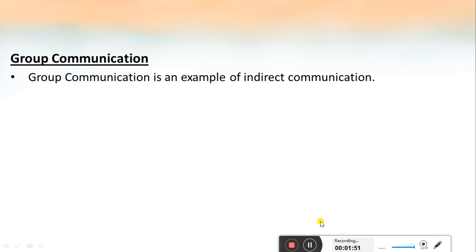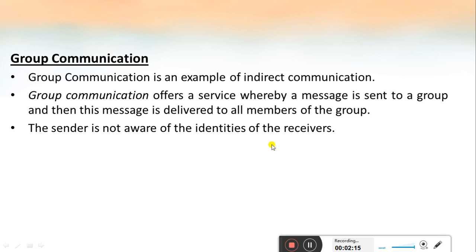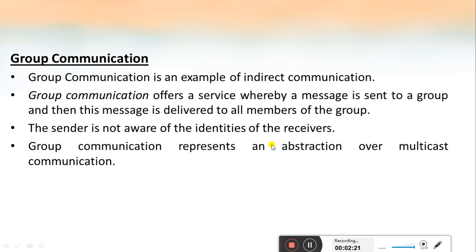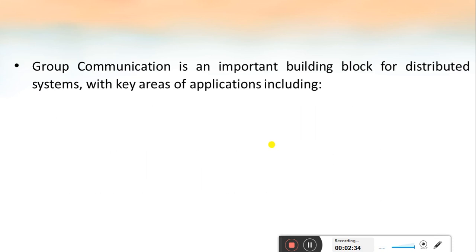Group communication is considered as an example of indirect communication. In group communication, there will be a sender that offers a service where a message is sent to a group, and then this message is delivered to all members of the group. The sender is not aware about the identities of the receivers. We can consider group communication as an abstraction over multicast communication.